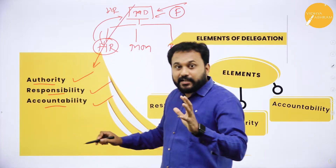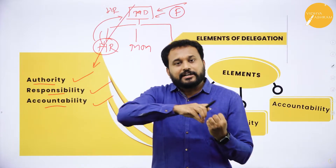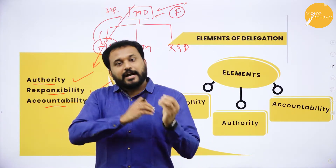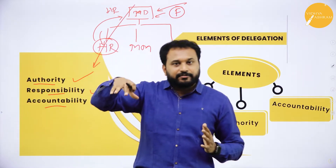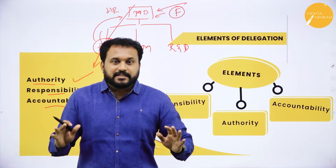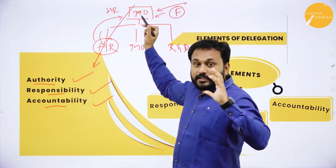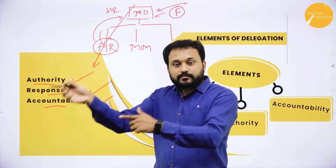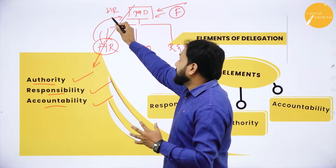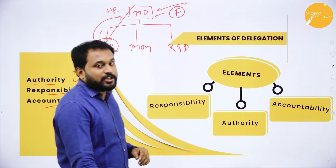Accountability is the most important and cannot be transferred to anybody. You can transfer authority; responsibility can be partially transferred — about 90% stays with you, 10% can be passed on. But accountability is 100% non-transferable. The HR manager is answerable to the MD for everything that happened in the organization during his absence — day to day, minute to minute.